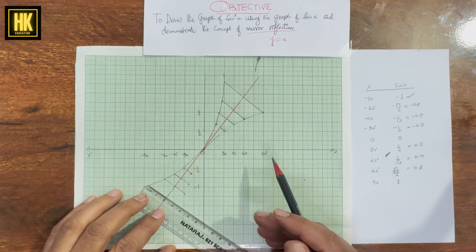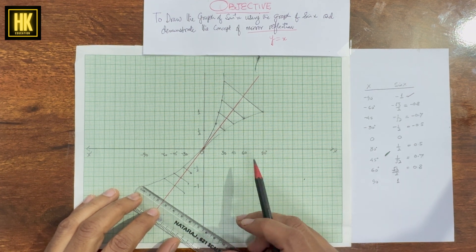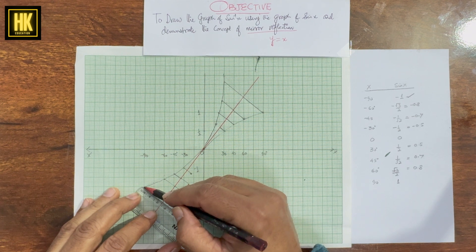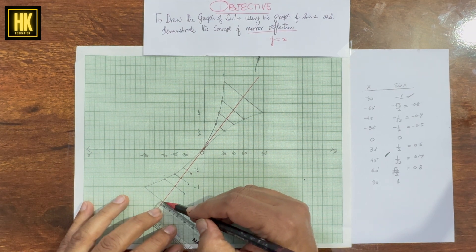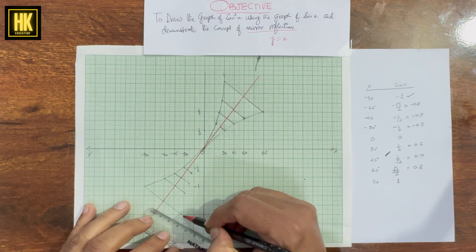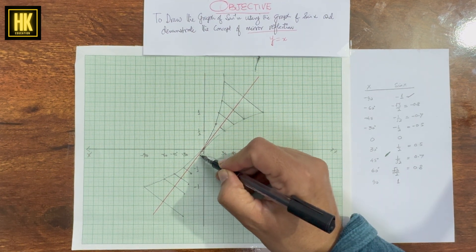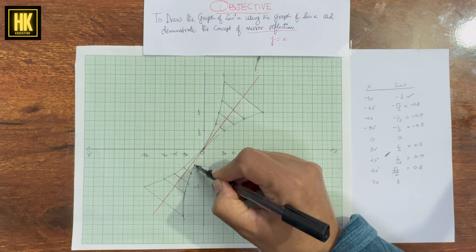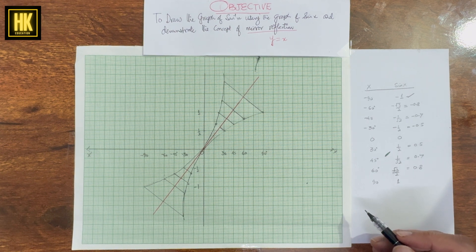Next, this is 90°. This measurement is 1.3 cm for the 90° point, then 2.5 cm, and this is also 2.5 cm. So this is the final graph of y = sine inverse x, obtained using the concept of mirror reflection.